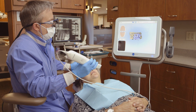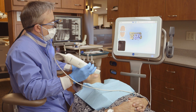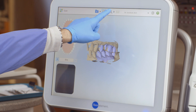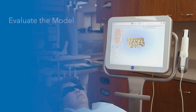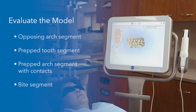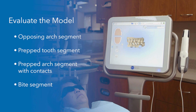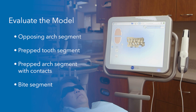Once I have completed all the required segments, I'll tap on the view icon at the top of the touchscreen display to view my digital model in high resolution. Once the case is processed, I will evaluate the model to ensure that it's accurate and complete. It's necessary to check the opposing arch, the prep tooth, the prepped arch and contacts, and the bite.